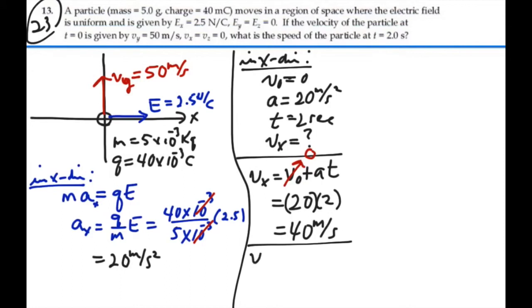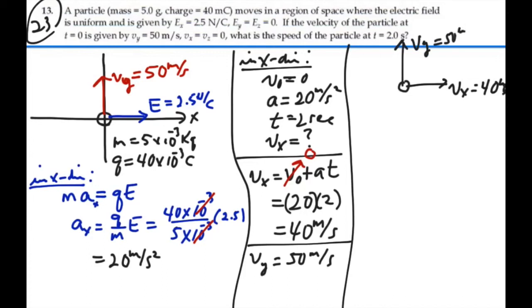We know our y velocity is constant. The whole time, it's 50 meters per second. So, at the end of 2 seconds, this particle, we're going to end up with this particle moving with 2 component velocities. It's going to have an x velocity of 40, and a y velocity of 50. And the net velocity will be the vector sum of these two. So, in terms of magnitude,